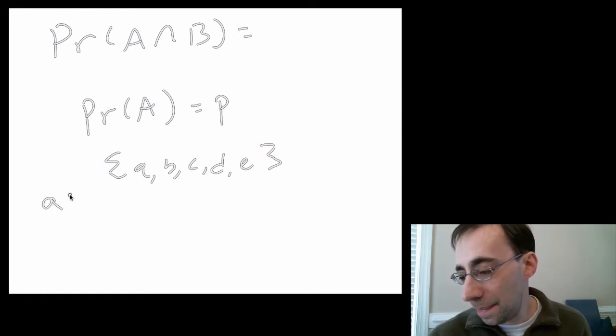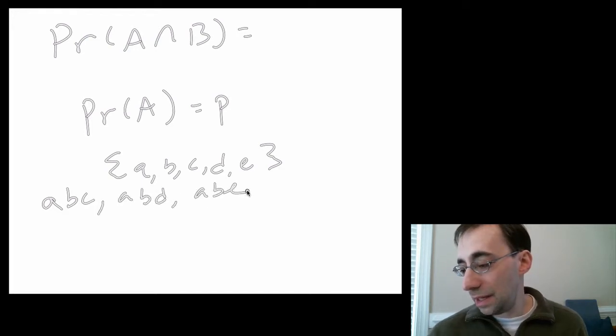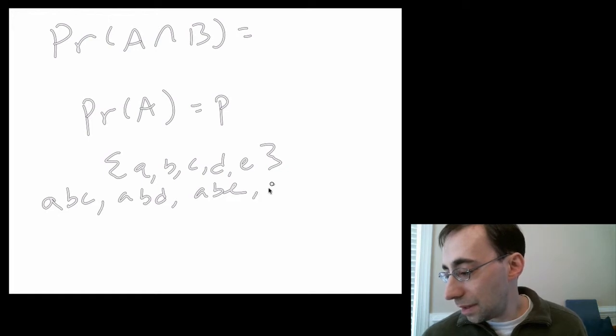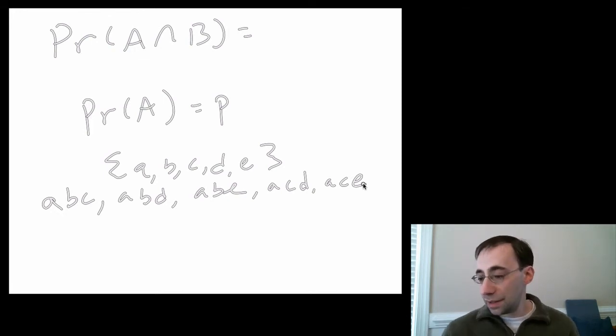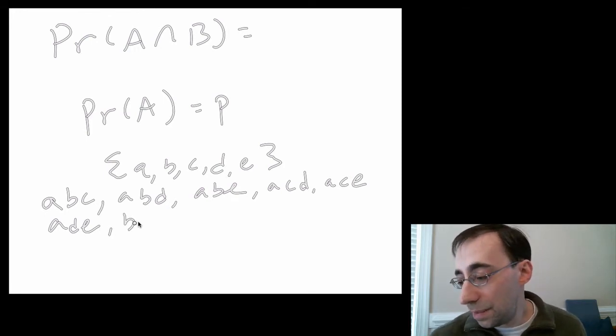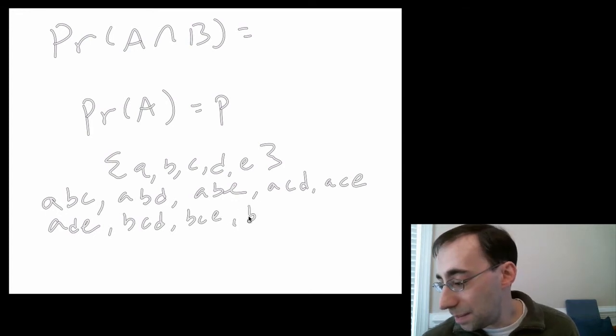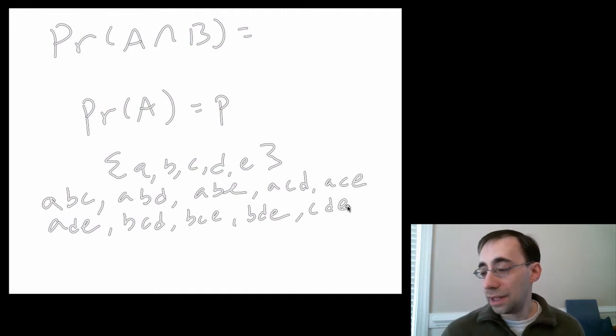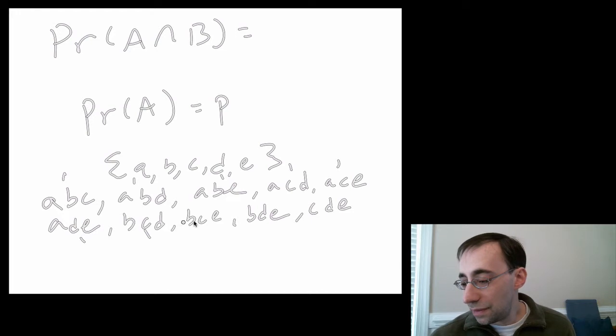One way to do this is to list them out. ABC is one way. ABD is another. ABE. Then we can go ACD, ACE. Then ADE. That's all the ones that involve A. Then for B, you get BCD, BCE, and BDE. Those are all the ones that involve B. And finally, CDE. It's the only one that involves C but not A and B. So that's it. We can count: one, two, three, four, five, six, seven, eight, nine, ten. We have ten things here.